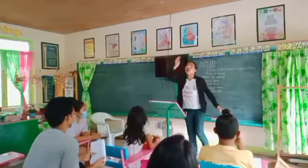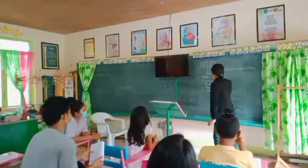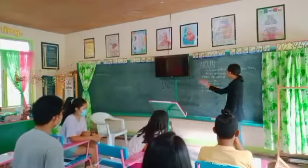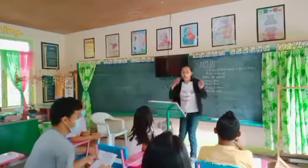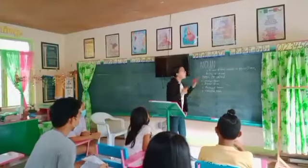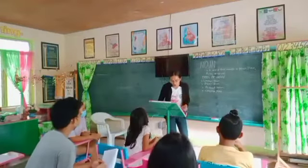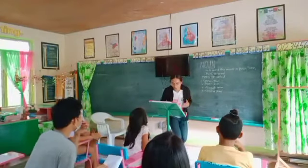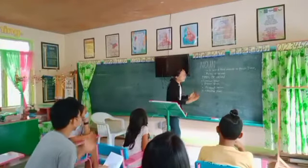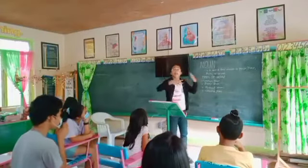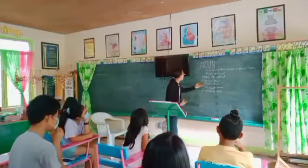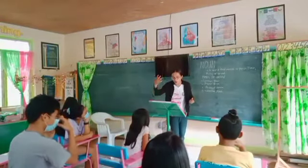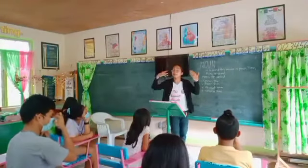So, noun has four types. The common noun, the proper noun, abstract noun, and collective noun. Now, if we say common noun, it refers to any person, place, object, or idea that is not formally named or not capitalized. However, if we say proper noun, it refers to a person, place, or object that is formally named and capitalized.